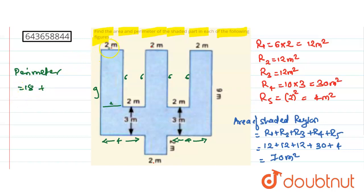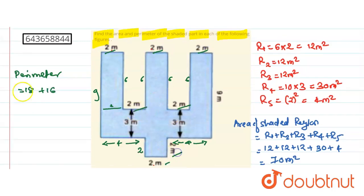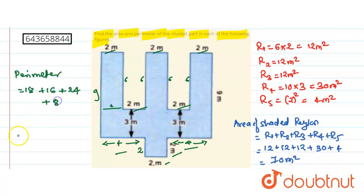Counting the 2s: there are six 2s. Counting the 6s: there are four of them, so 4 into 6 is 24. And there are two 4s, giving 4 plus 4 equals 8. So the perimeter is 18 plus 24 plus 8 plus the remaining sides — giving a total perimeter of 66 meters.